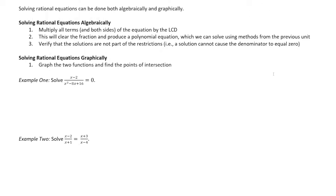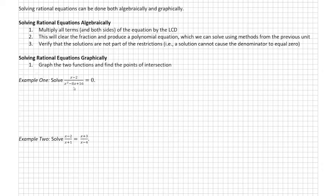Let's get started with the first example: x minus 2, all divided by x squared minus x plus 16, set equal to zero. I'm going to look at the denominator here, and I'm unable to get any restrictions just by looking at it, so I'm going to want to factor it first.